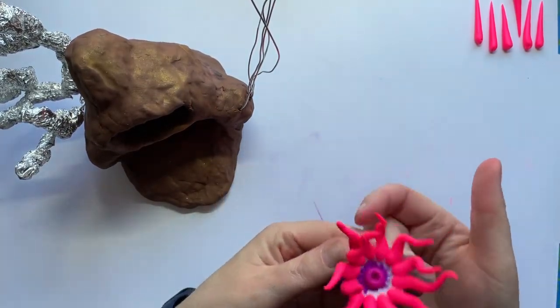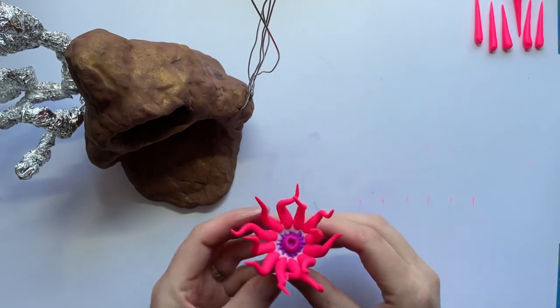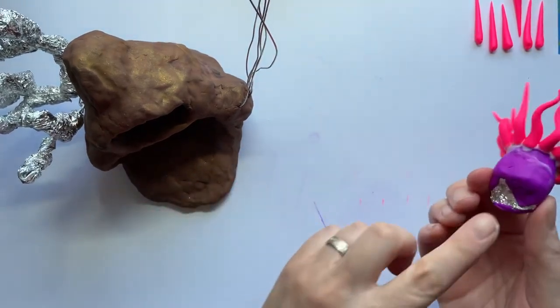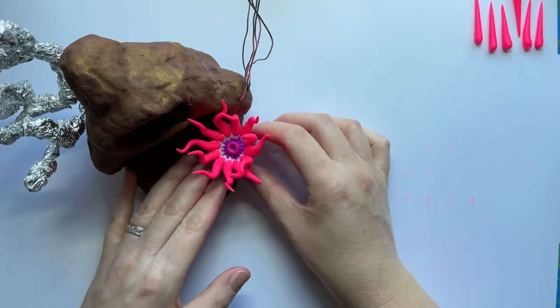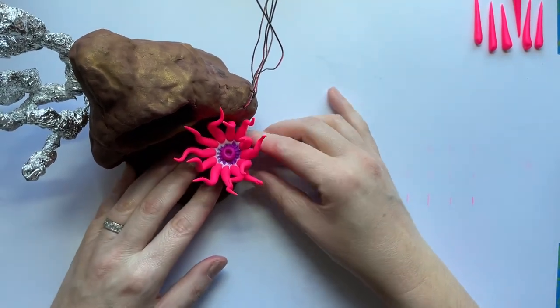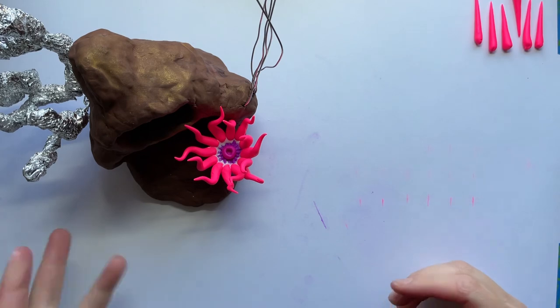When you go to add it on to your base, you're gonna need to add glue on to the bottom here and then you can push this on to that with a little glue, and then you can go ahead and bake it.